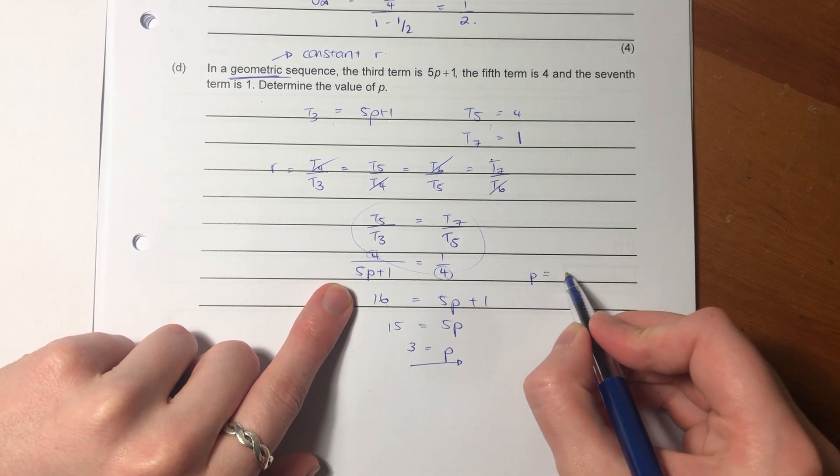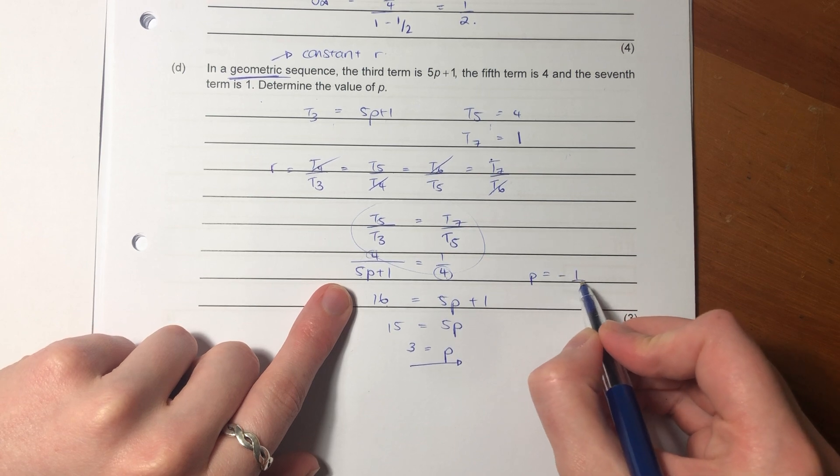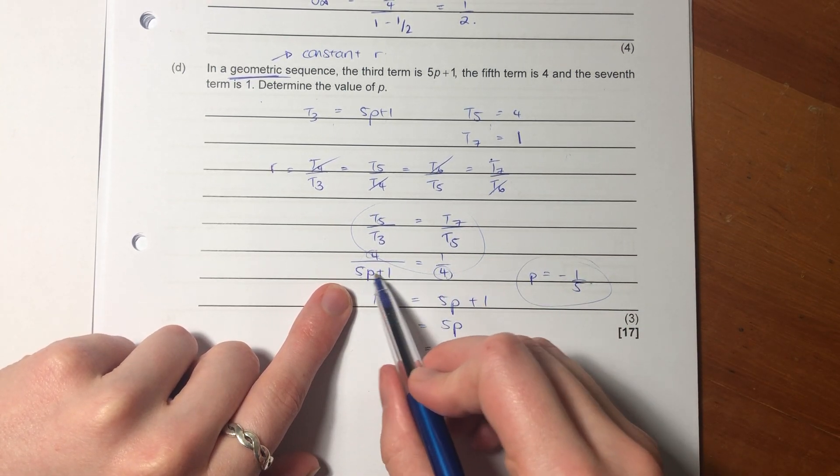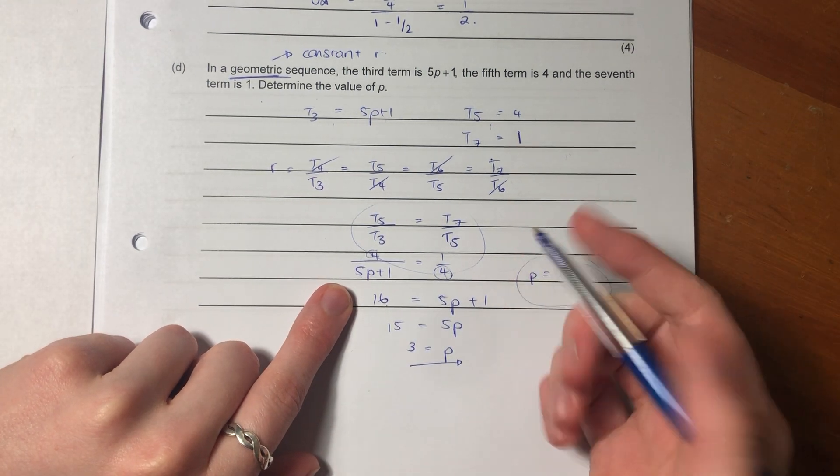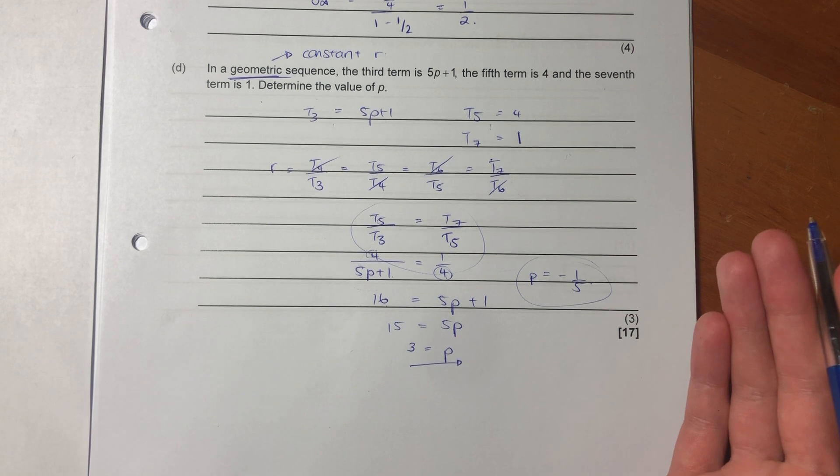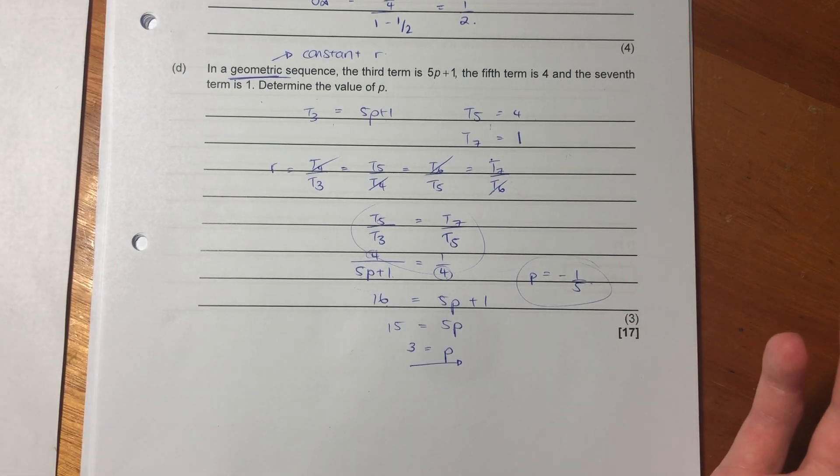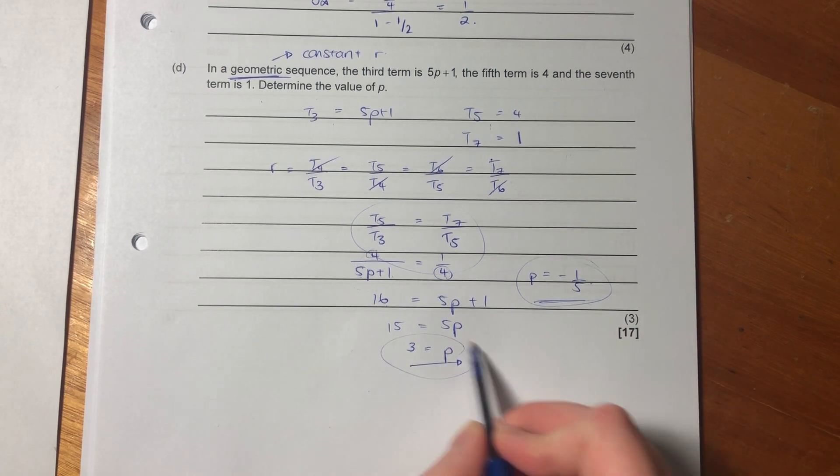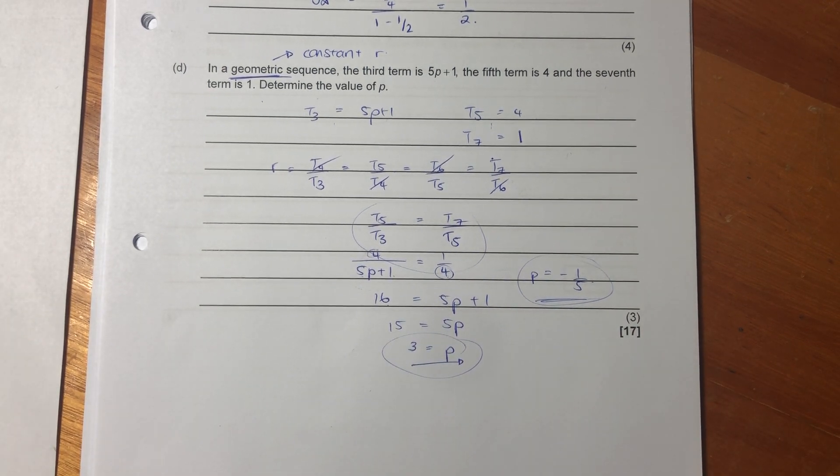Importantly here, P cannot equal negative one over five, because that would make the denominator zero, which would make this undefined. And you can't have that. That's mathematically, it just doesn't give us an answer. So that's the only thing that can't equal, but we now have given it a specific value and said it has to equal three.